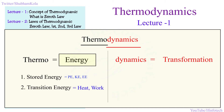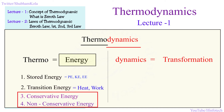Heat and work are observed at the boundary of the system. There is another classification of energy: conservative and non-conservative. Conservative energy is that energy which can basically be conserved.